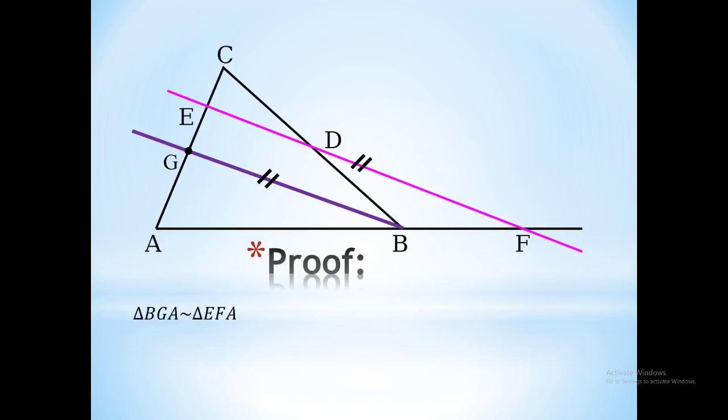After we construct those parallel lines, we can see by similar triangles that triangles BGA and EFA are similar. From that, we can conclude that the length of line FA over the length of line FB equals the length of line EA over the length of line EG.